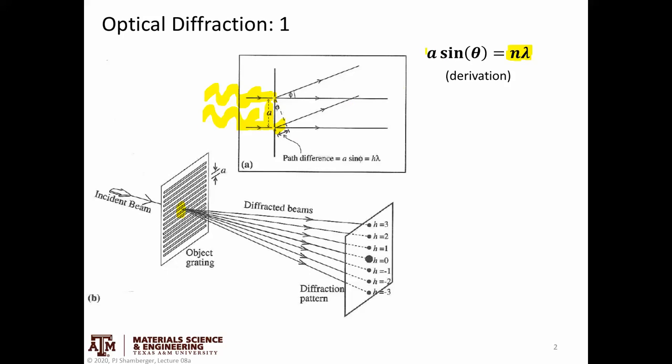And so the general equation that describes whether or not we see a diffraction spot is if this path difference, this distance, which, again, if A is the separation here and phi is the angle of takeoff, A times the sine of phi is given by this length, the path difference, if that equals an integral number of wavelengths. So if it adds up to an even integer number of wavelengths, then you have constructive interference, and if it doesn't, you have destructive interference.